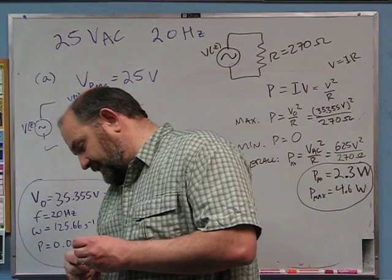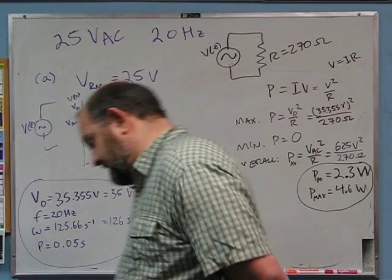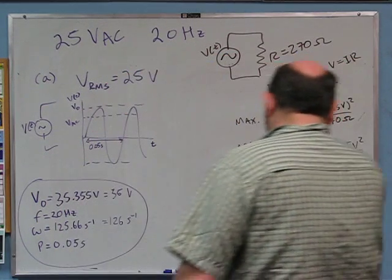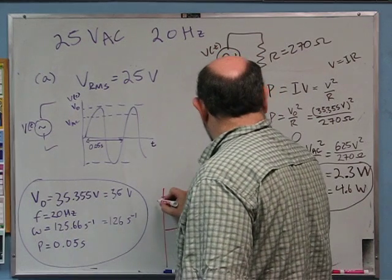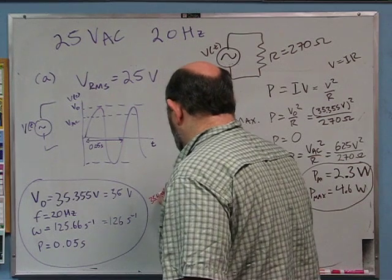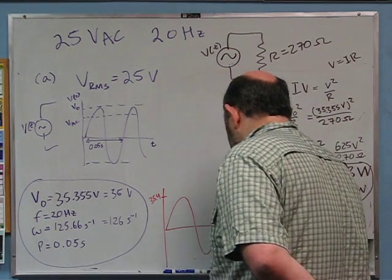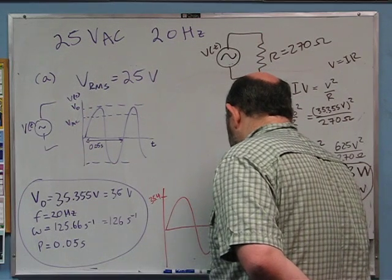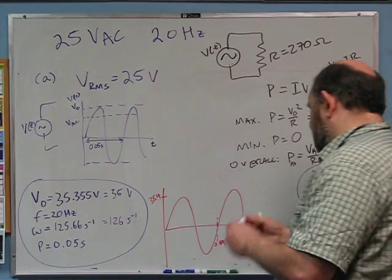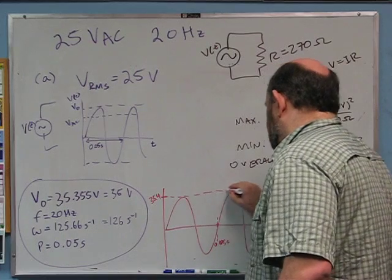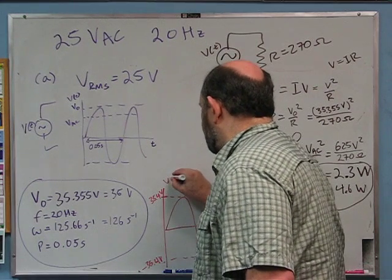Part C: plot the voltage across the resistor, current through the resistor, and power dissipated as functions of time. The voltage oscillates between plus and minus 35.4 volts with a period of 0.05 seconds. The current is in phase with the voltage and has a maximum of 35.355 volts divided by 270 ohms — so I_max is 0.13 amps.